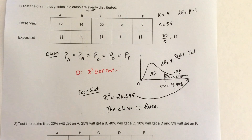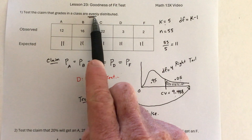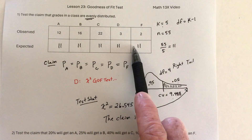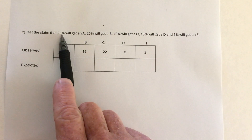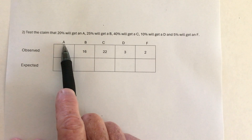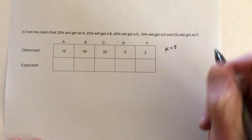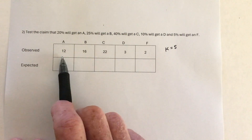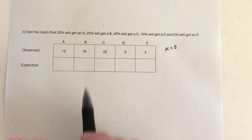Now we need to do one more example. With the goodness of fit test there are two types. The first type says evenly distributed — you take the total number of people, divide by the number of categories, and use that for all expected values. The second type gives specific percentages for each category. The number of categories is still 5, and the same observed numbers add up to N equals 55 people — all I'm changing is the claim.